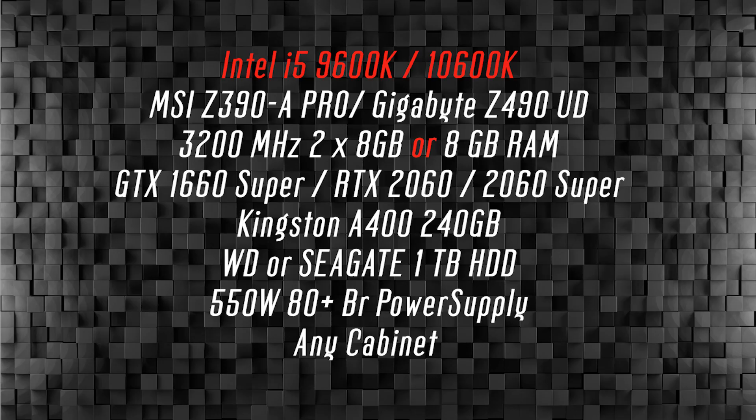The 10600K reaches a maximum of 4.8 GHz and is an unlocked model, so on a Z490 platform motherboard you can easily overclock the processor. Overall, for a higher medium budget gaming build, the i5-9600K or i5-10600K is the best Intel gaming processor.